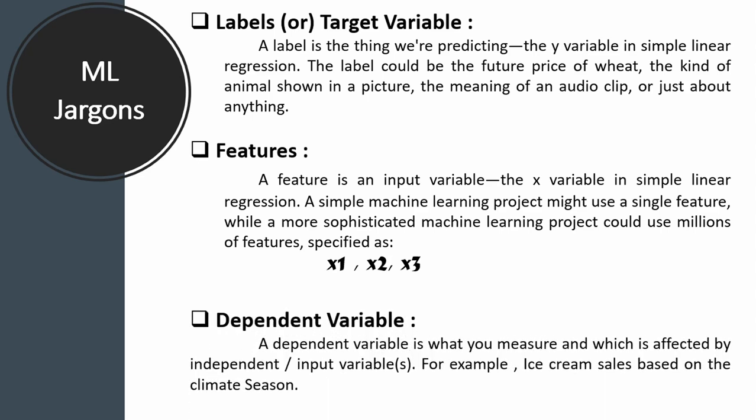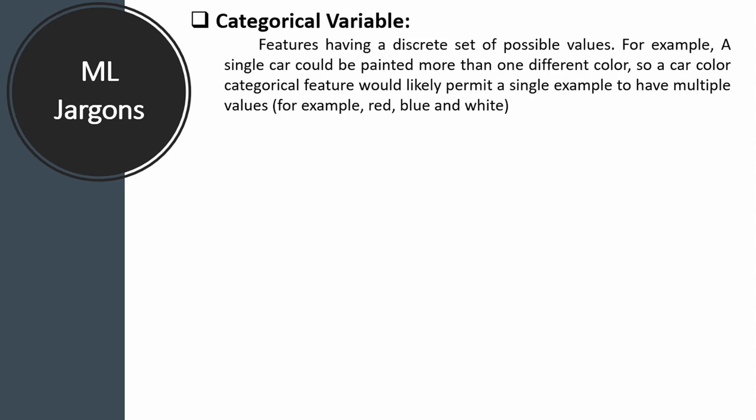A dependent variable is also a kind of target variable — it depends on your input variables. For example, ice cream sales based on climate season: ice cream sales is the prediction variable and climate season is the dependent variable. A categorical variable is a set of possible outputs in a prediction Y variable — for example, car color: red, blue, white, etc. The output must be one of this set; you cannot measure beyond these categories.